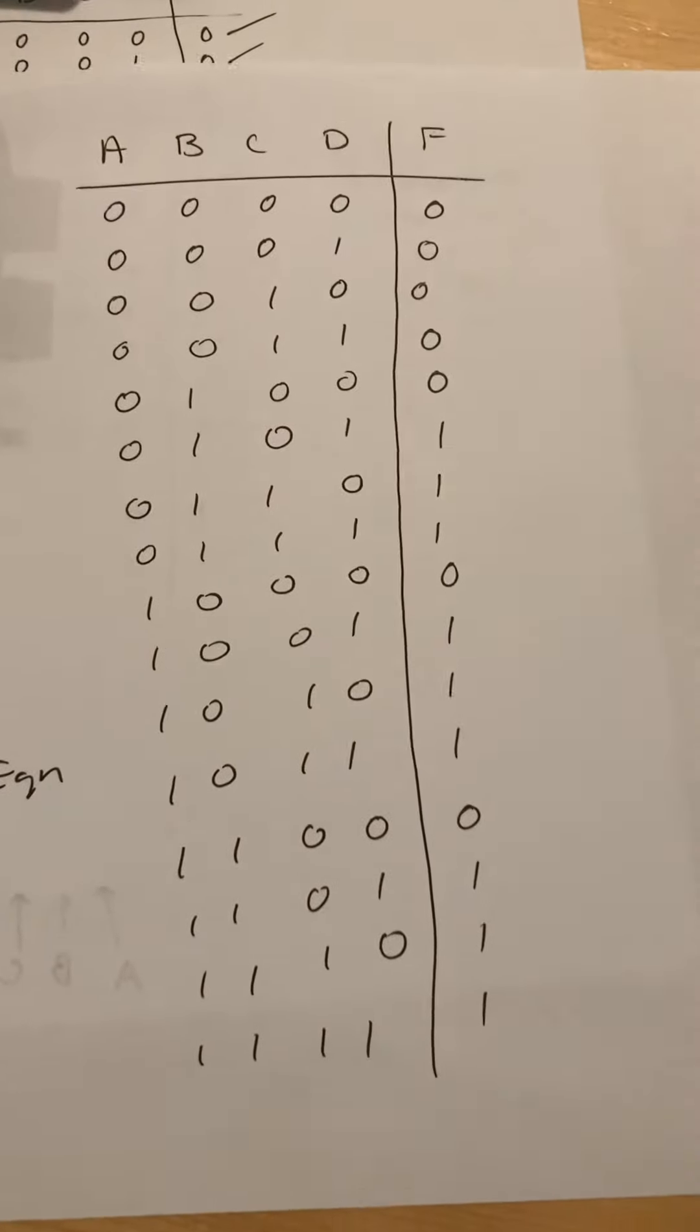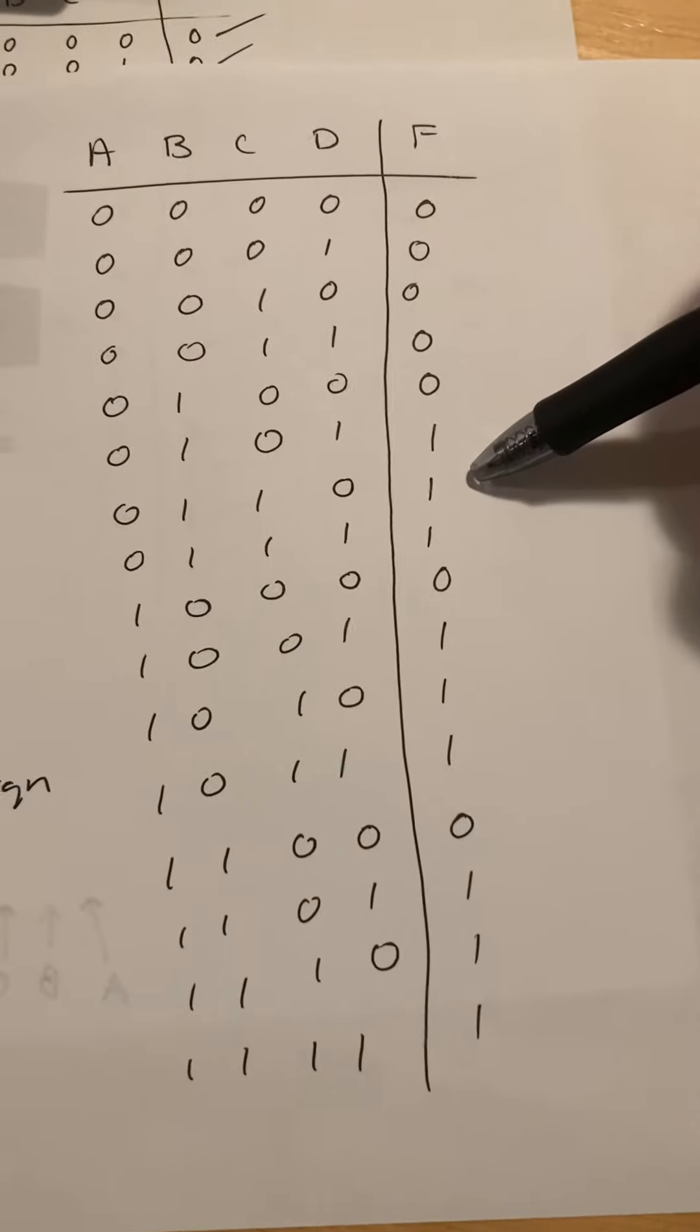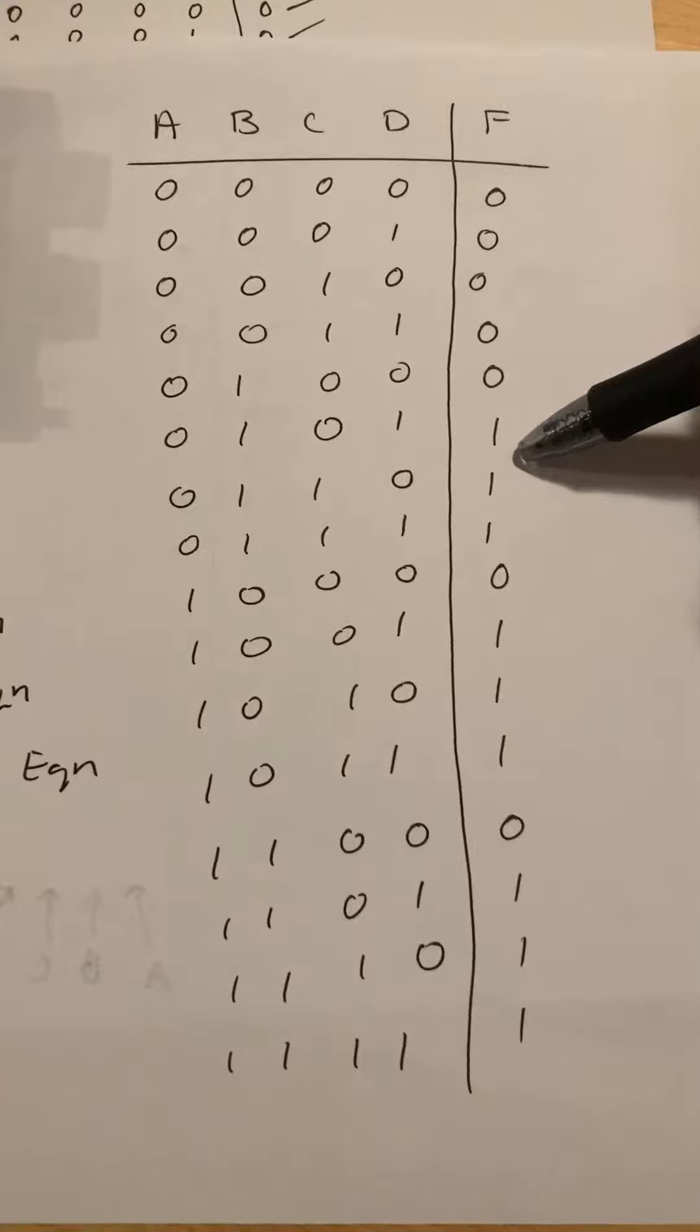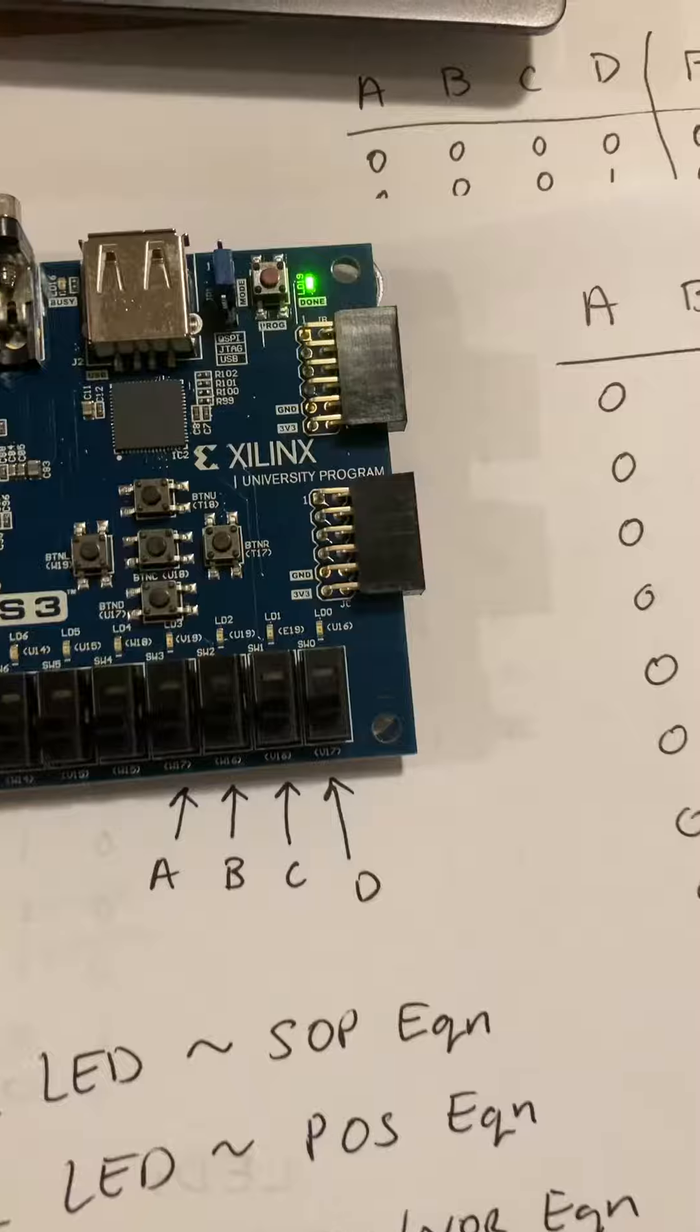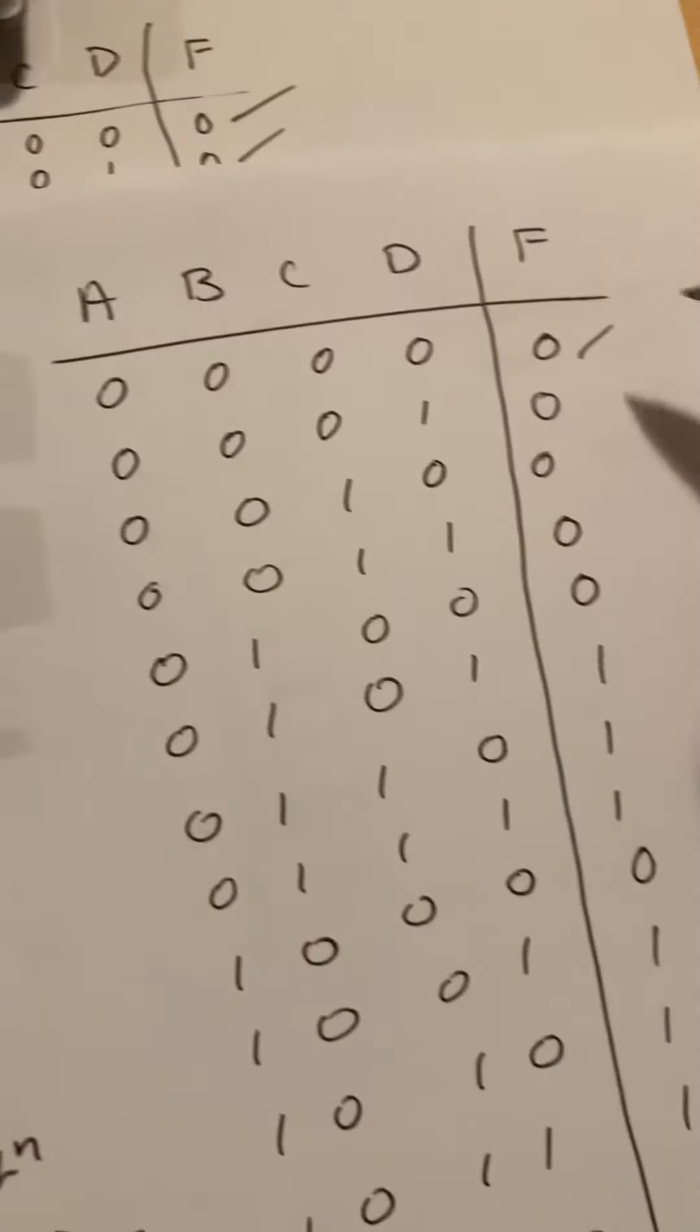For this truth table, there are nine conditions where we'll get a true condition, and that will mean all three LEDs will light up. So right now we're in 0000, all switches off. Let me show that the LEDs are off.